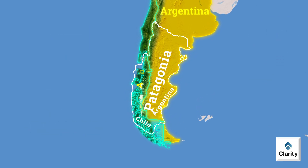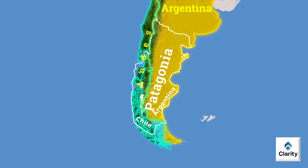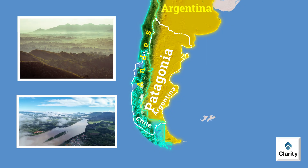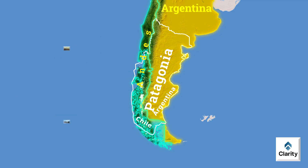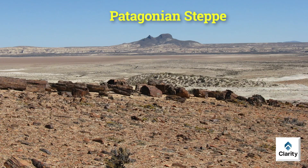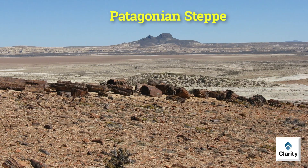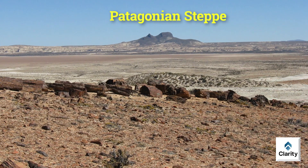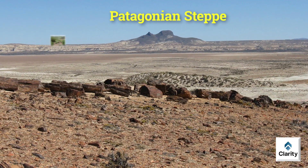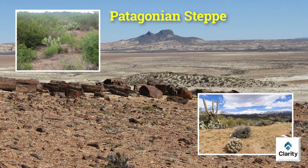On Patagonia's western side, the Andes mountains run north to south. This region is mountainous and rugged, with glaciers, lakes and dense forests covering the landscape. On the eastern side lies the Patagonian desert, also called the Patagonian steppe. This desert is cold, dry and windswept. Rainfall here is very low — most areas get less than 20 cm of rain annually. Vegetation consists mostly of shrubs, grasses and tough low plants.